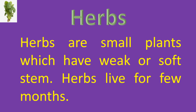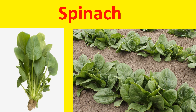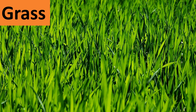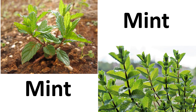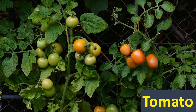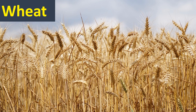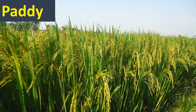Herbs have a soft stem and live for only a few months. Let us see some examples: Spinach, Grass, Coriander, Mint, Tomato, Wheat, Paddy, and Banana.